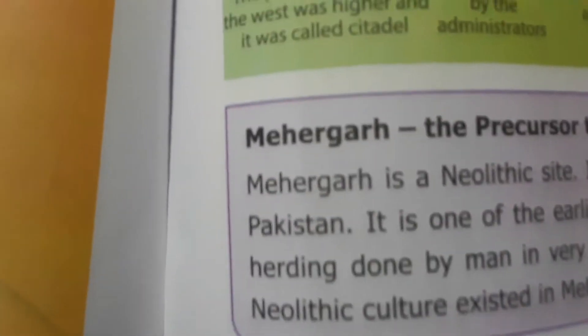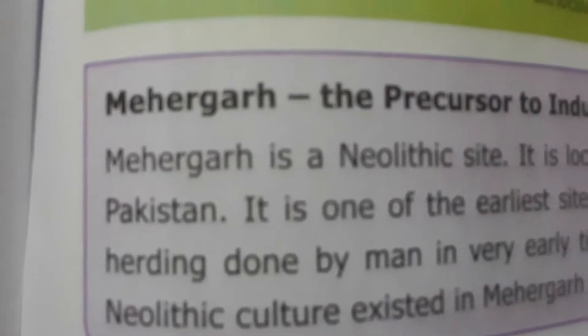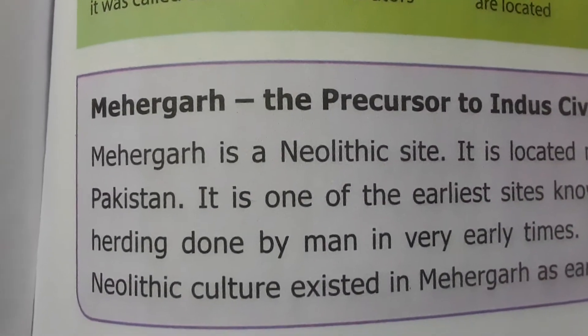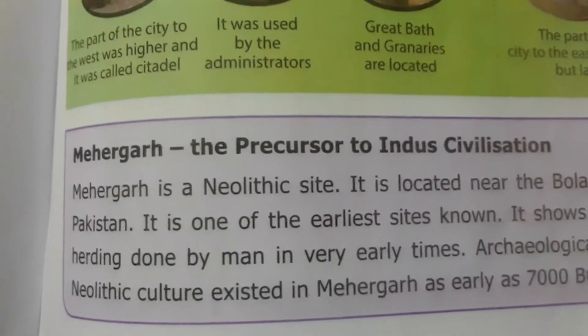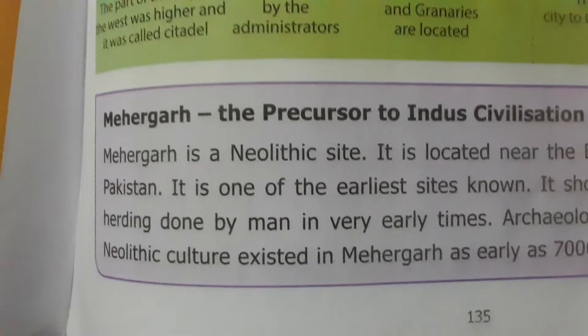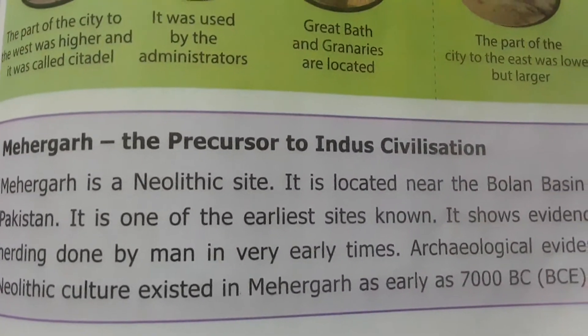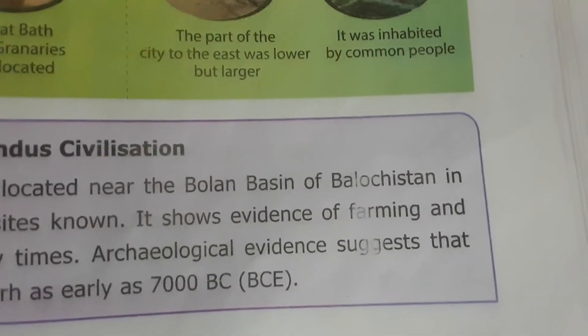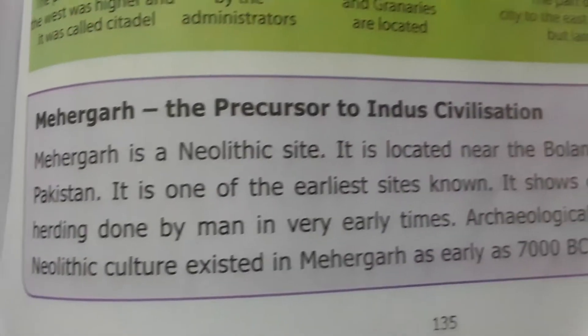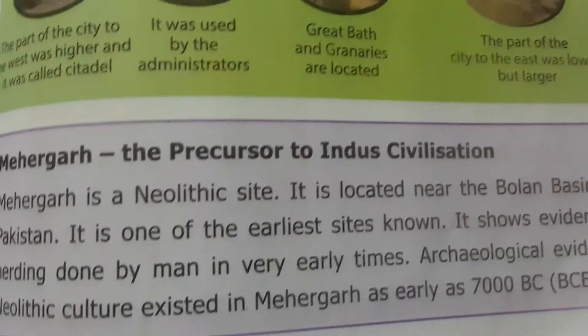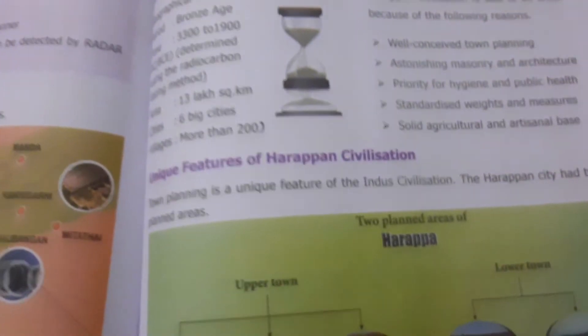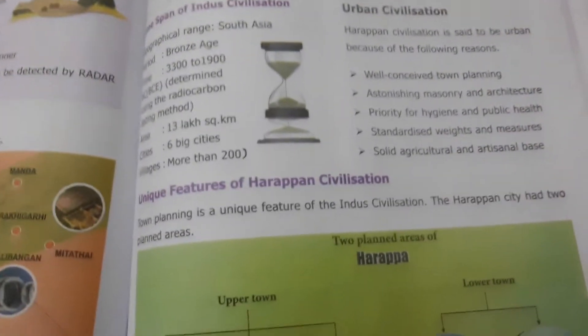Mehargar is a Neolithic site that is a precursor to the Indus civilization. It is located in Pakistan. It is one of the earliest sites known and shows evidence of farming and herding done by man in very early times. This is a very important point to remember.